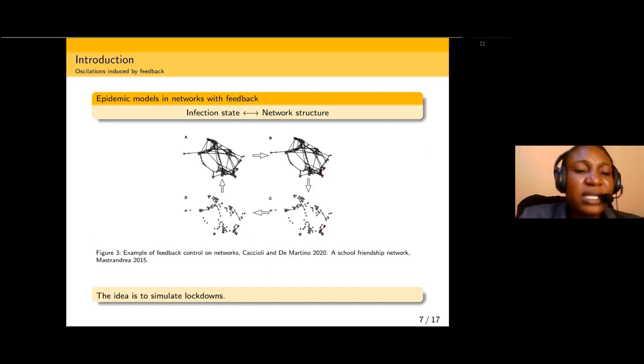Epidemic oscillations induced by feedback: epidemic models in networks with feedback link the infection state to the network structure. From Figure 3, this is an example of a school friendship network by Matron 2015. The infection can spread faster because the nodes are jam-packed, they are close to each other. When the nodes begin to split, you can see the rate of transmission reduces.